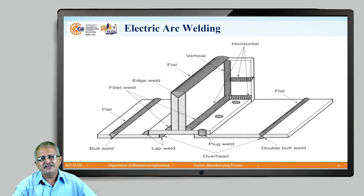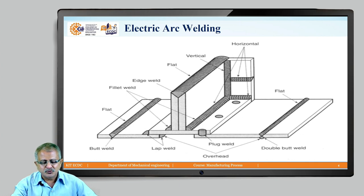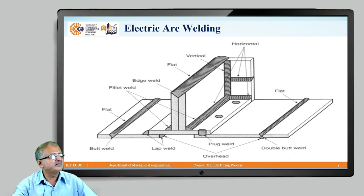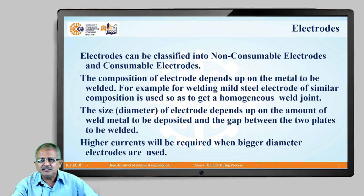This diagram illustrates all the types of welding joints that can be produced with electric arc welding. It shows a lap weld, butt weld joint, double butt weld joint, flat weld, horizontal weld, vertical weld, overhead weld, and plug weld. All these different weld positions and edge preparations can be successfully performed as per the strength and quality requirement. This demonstrates the excellent process capability of electric arc welding.